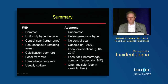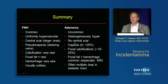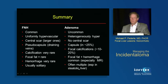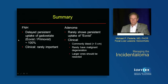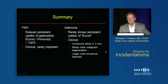Let's summarize FNH versus adenoma. FNH is common; adenoma is uncommon. FNH is uniformly hypervascular; adenoma is heterogeneous. FNH has a scar in larger lesions; adenomas don't have a central scar. FNHs don't have a real capsule — just draining veins that may mimic a capsule; at least 25% of adenomas have a capsule. Calcification is extraordinarily rare in FNH, much more common in adenomas. Focal fat is very rare in FNH; focal fat and hemorrhage are characteristic of adenoma on MR. FNH virtually never bleeds; adenomas have a bad habit of bleeding. FNHs are usually solitary; adenomas are often multiple, especially in a steatotic liver.